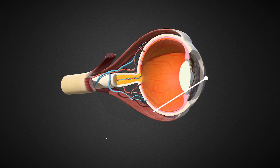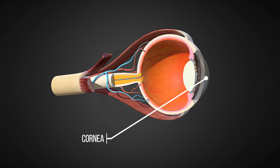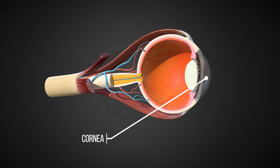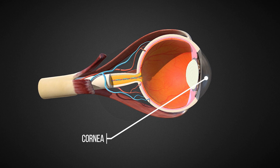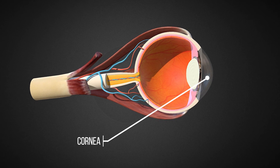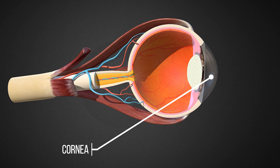In contrast, the cornea is a clear dome-shaped structure that covers the front of the eye. Its curvature and transparency are essential for refracting light, directing it through the pupil and onto the internal structures for accurate focusing.